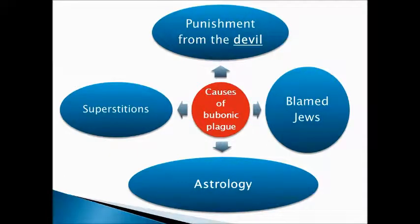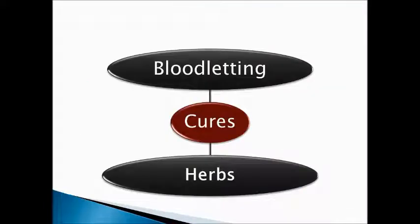What did people in the Middle Ages think caused the bubonic plague? They thought you must have been with the devil — it was punishment from the devil. Or they blamed the Jews, saying maybe the Jews wanted to wipe out the Christians. Maybe it was astrology — if you were born in August and you're a Leo, maybe you'd get it. Or maybe superstition — maybe you saw a black cat that day. As for cures, doctors would let some of your bad blood out through bloodletting, or use herbal medicine. These cures did not work.